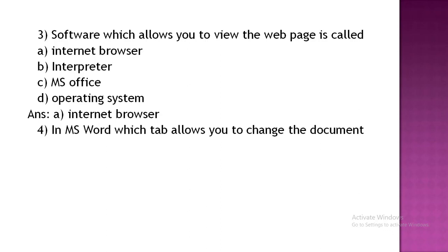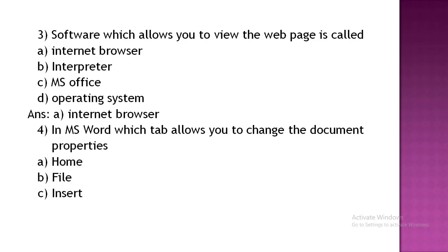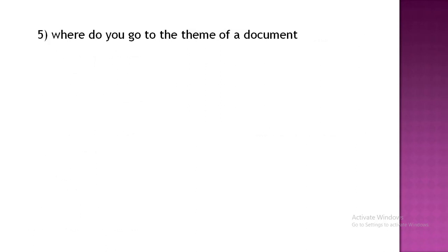In MS Office, a digital tool allows you to change the document — that is, MS Office document properties. Option A: folder. Option B: file. Option C: insert. Option D: none of these. The correct answer is Option D, none of these.